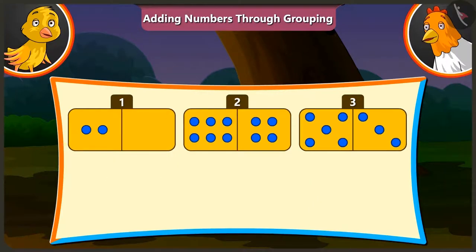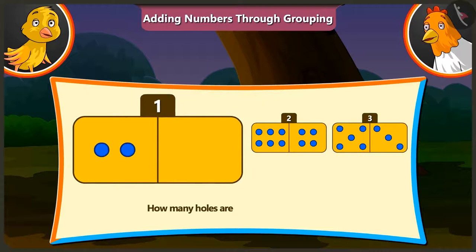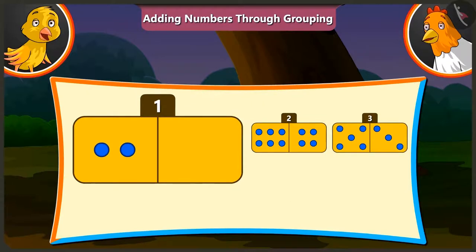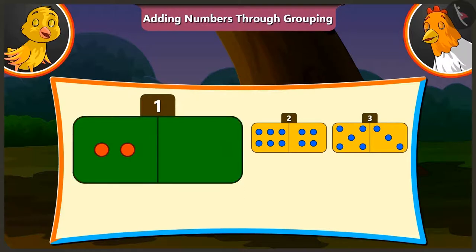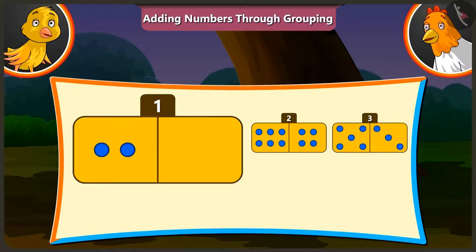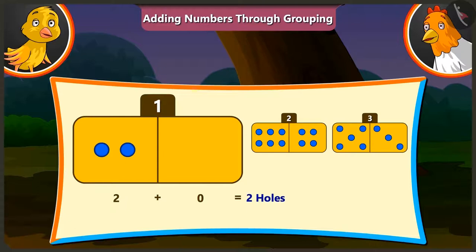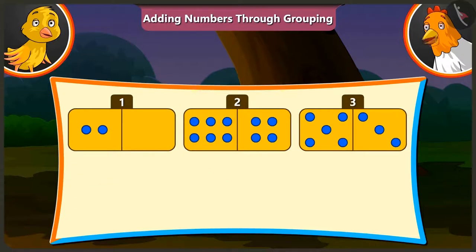Now tell me the number of holes on the first card. The first card has 2 and 0 holes. If we add 0 to any number, we get the same number. Hence, on adding 0 holes and 2 holes, we get 2 holes. Well done, Peeloo.